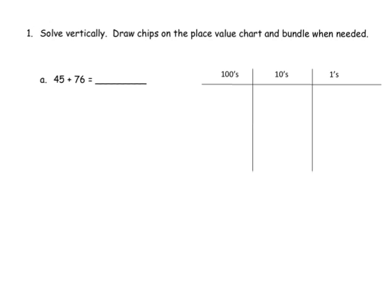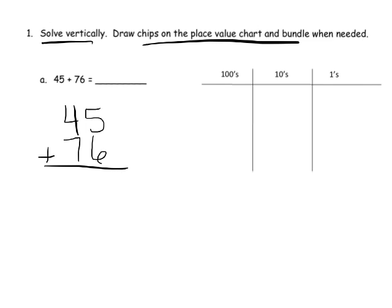So we're going to solve this using the standard algorithm, and then we're going to verify it on our place value chart. Let's get going with this. We're going to start by writing 45, and then we're going to put 76 right underneath, making sure that our ones columns and our tens columns are lined up.